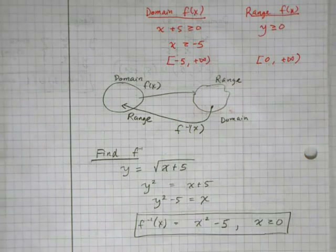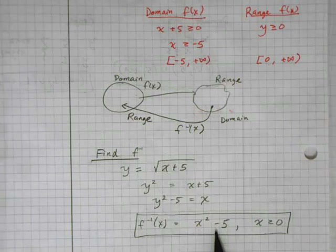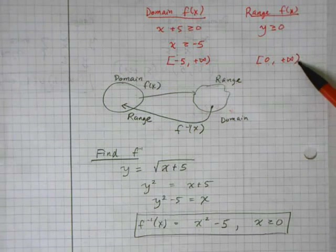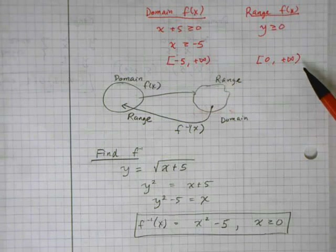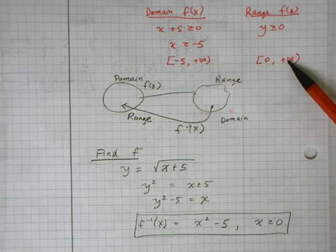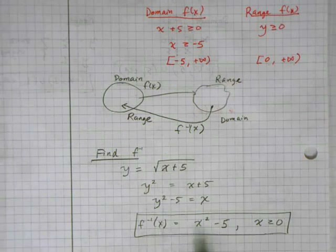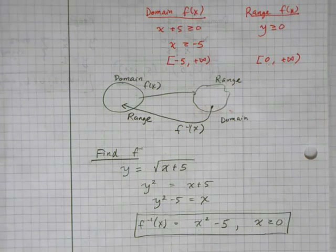Once I find f inverse, it may appear to have a domain of all real numbers. We have to keep in mind that f inverse inherits the restrictions from the original function f of x — specifically the restrictions on the range, because we're swapping the two. The range of the original function goes from 0 to positive infinity, so the domain of f inverse must also go from 0 to positive infinity and cannot go outside those restrictions.